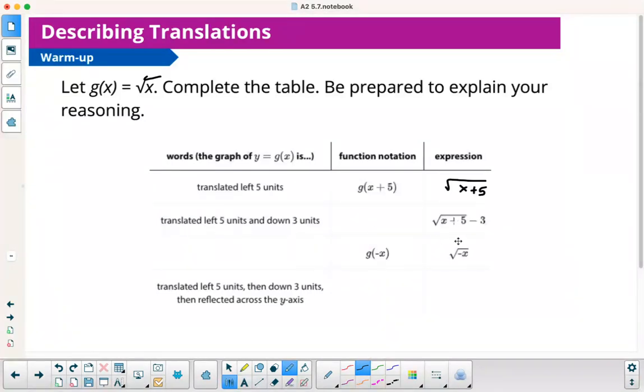Now this one, they give us the expression and the words, so you could do it either way. If we're going to go 5 left, it's the same thing here, x plus 5, g of x plus 5. And then down 3 would mean you'd have to subtract 3.